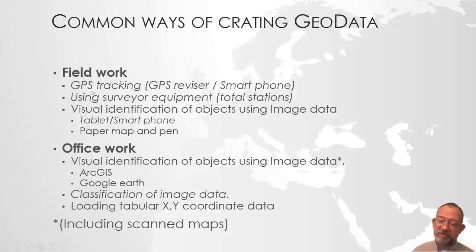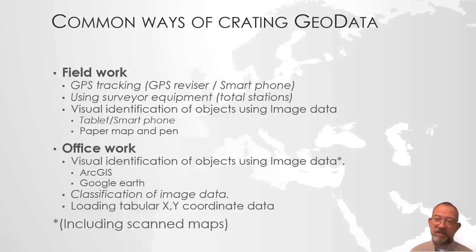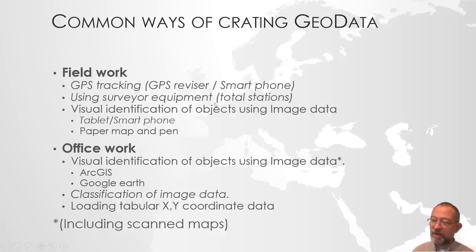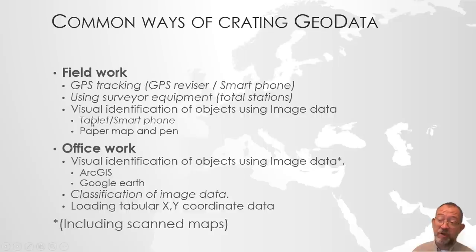Another thing I will briefly mention is the use of survey equipment — total stations. These are advanced devices that can measure angles and distances, and modern ones can do it automatically, scanning an object from a specific location and calculating with sub-millimeter precision. For profiling streams or assessing landslide dangers, that's the type of equipment you'd use. They require more training than just watching a video, so I won't cover them in depth, but I'm happy to give a tutorial on total stations if needed.